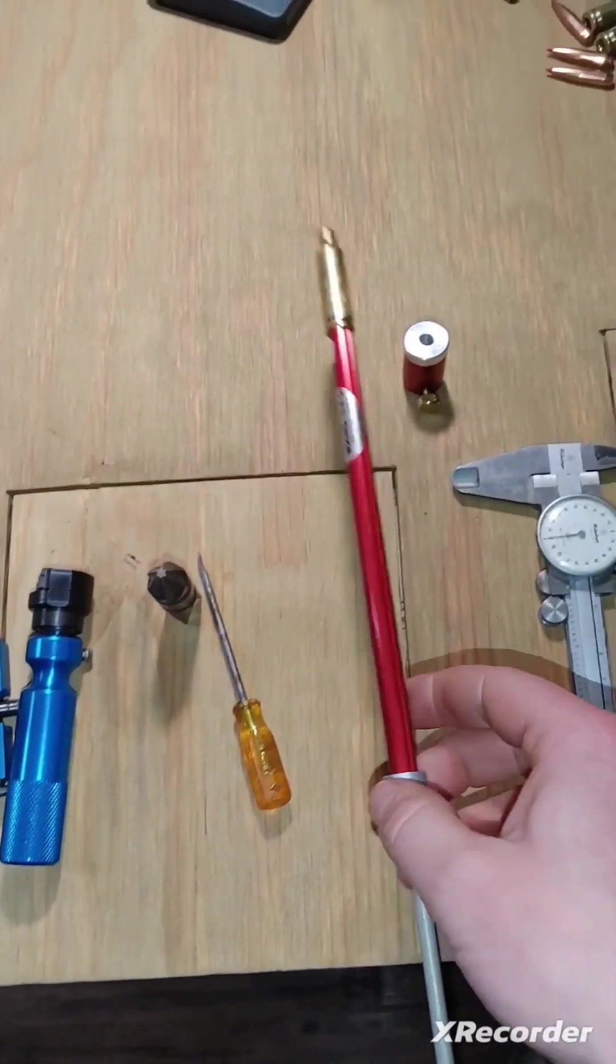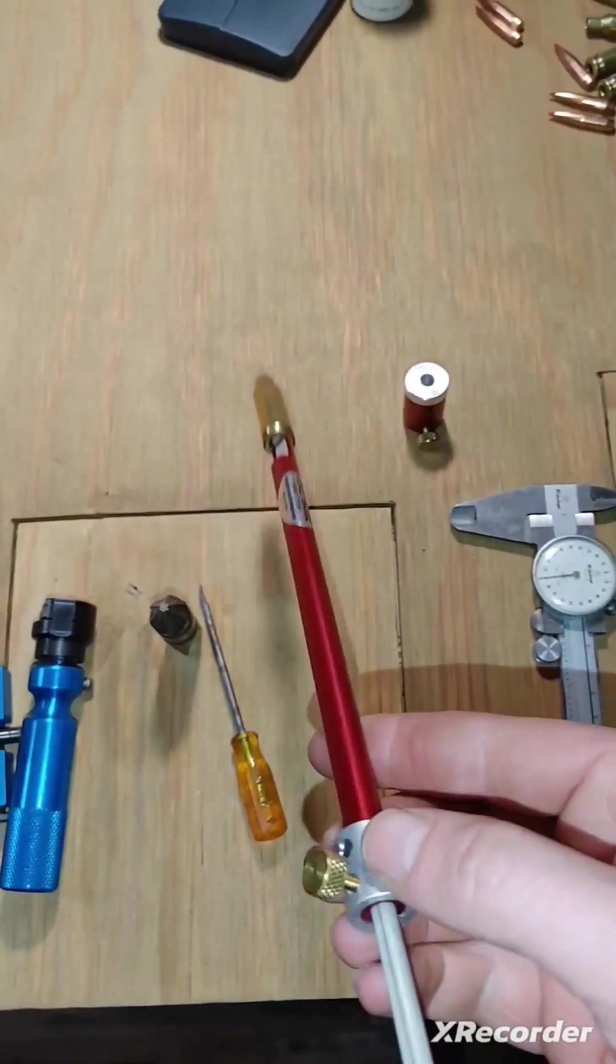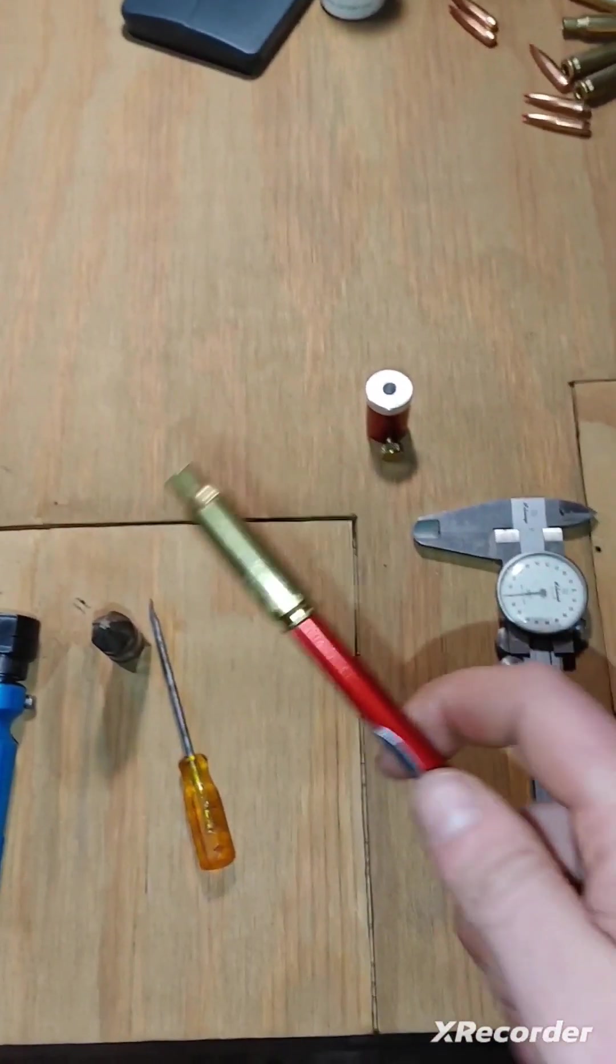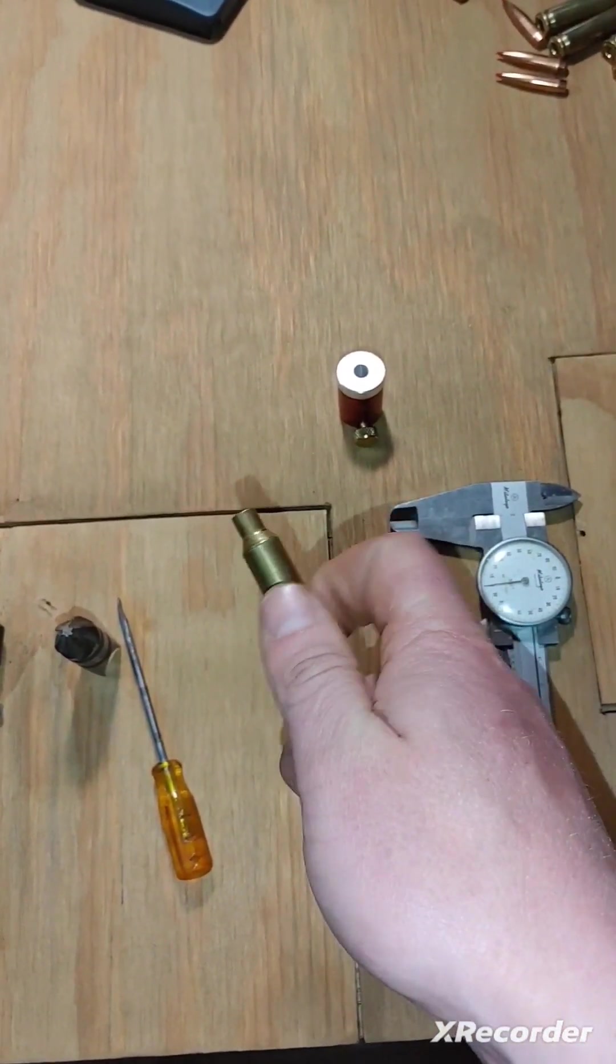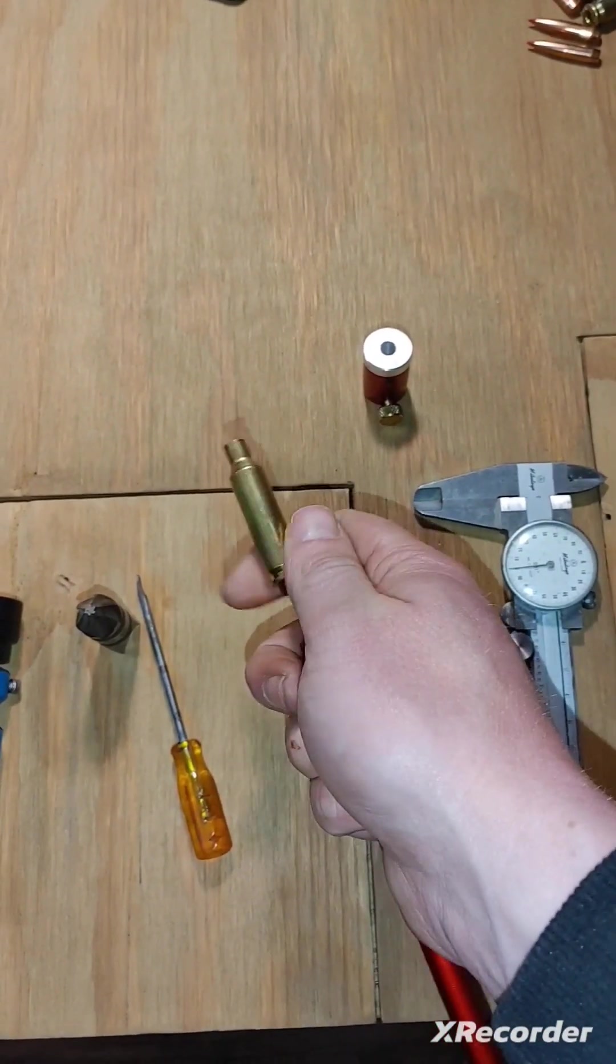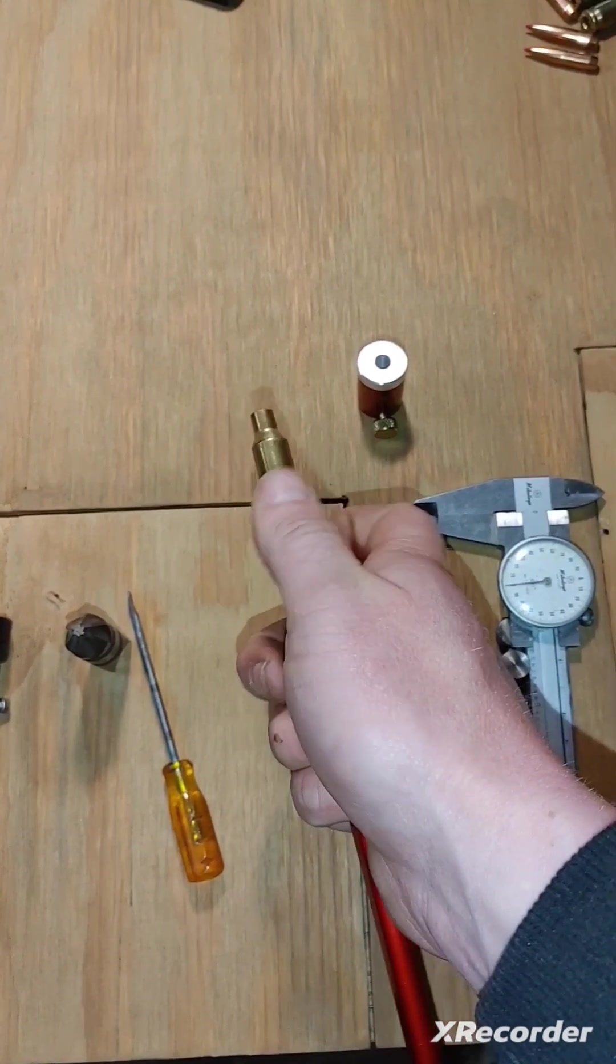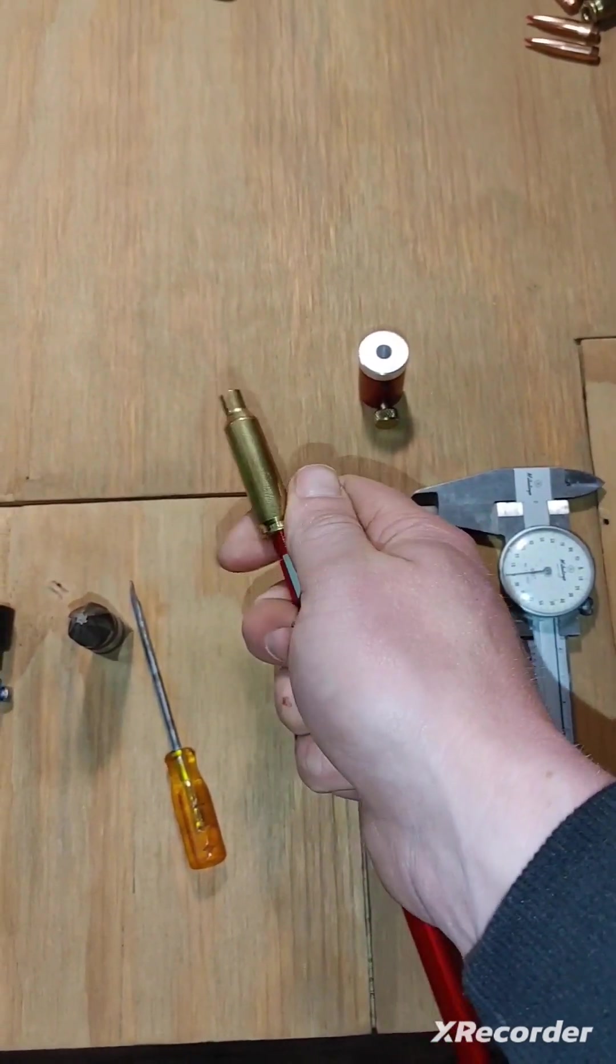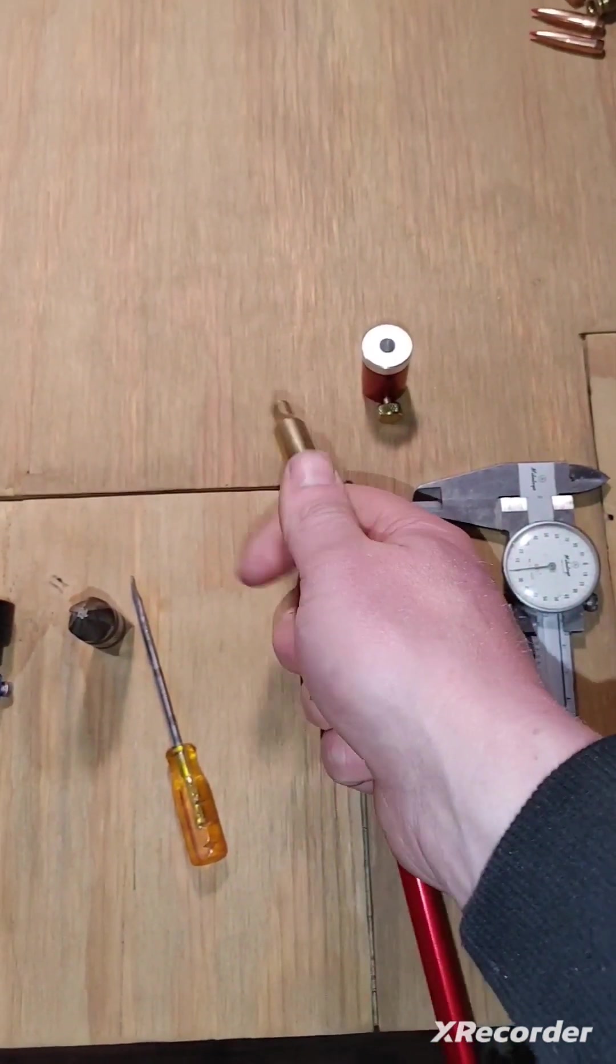This is a Hornaday overall length gauge. This one is for bolt-action rifles. You have to purchase the case separately. It threads on to the end of this and goes into your chamber. We'll cover how to use this in a different video.